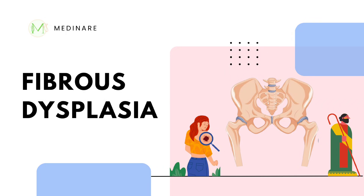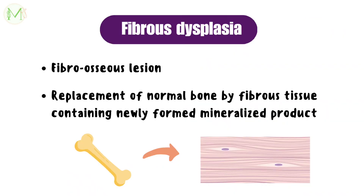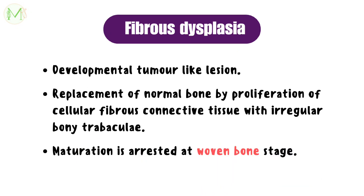Welcome back to MedinAir. In this video, let's discuss Fibrous Dysplasia. Fibrous dysplasia is a type of fibro-osseous lesion where normal bone is replaced by fibrous tissue containing newly formed mineralized product. It is a non-hereditary developmental tumor-like lesion where replacement of normal bone by proliferation of cellular fibrous connective tissue with irregular bony trabeculae occurs. Maturation of bone is arrested here at the woven bone stage.